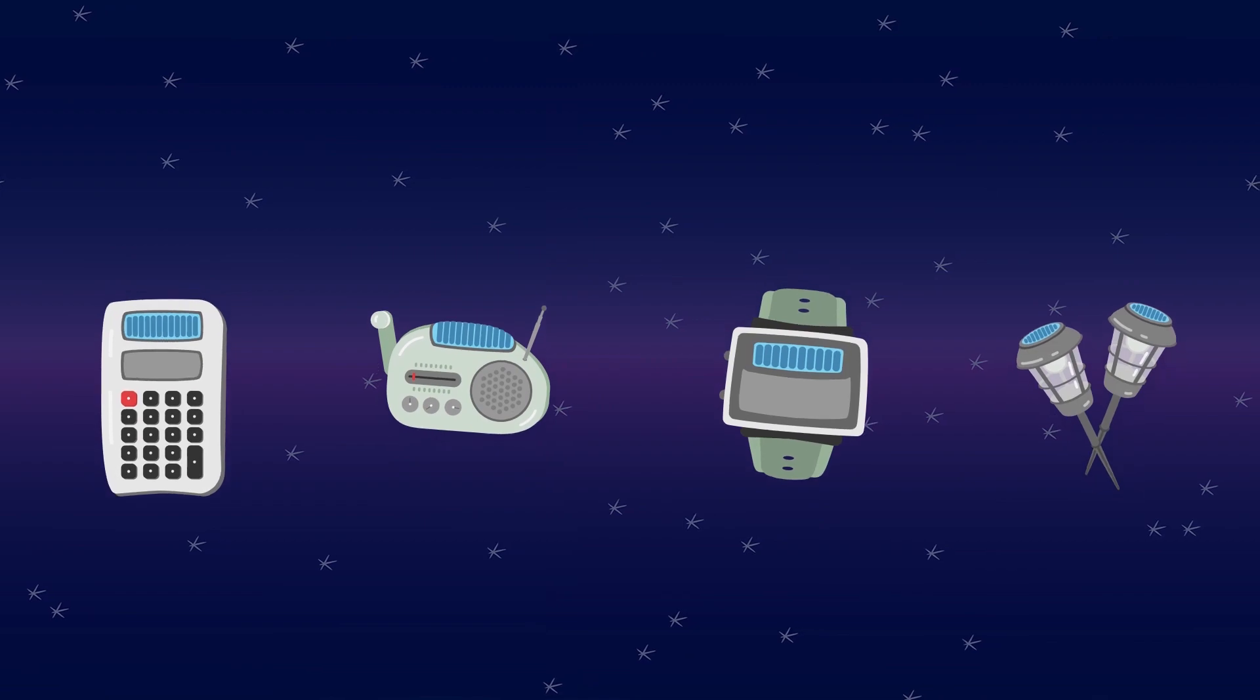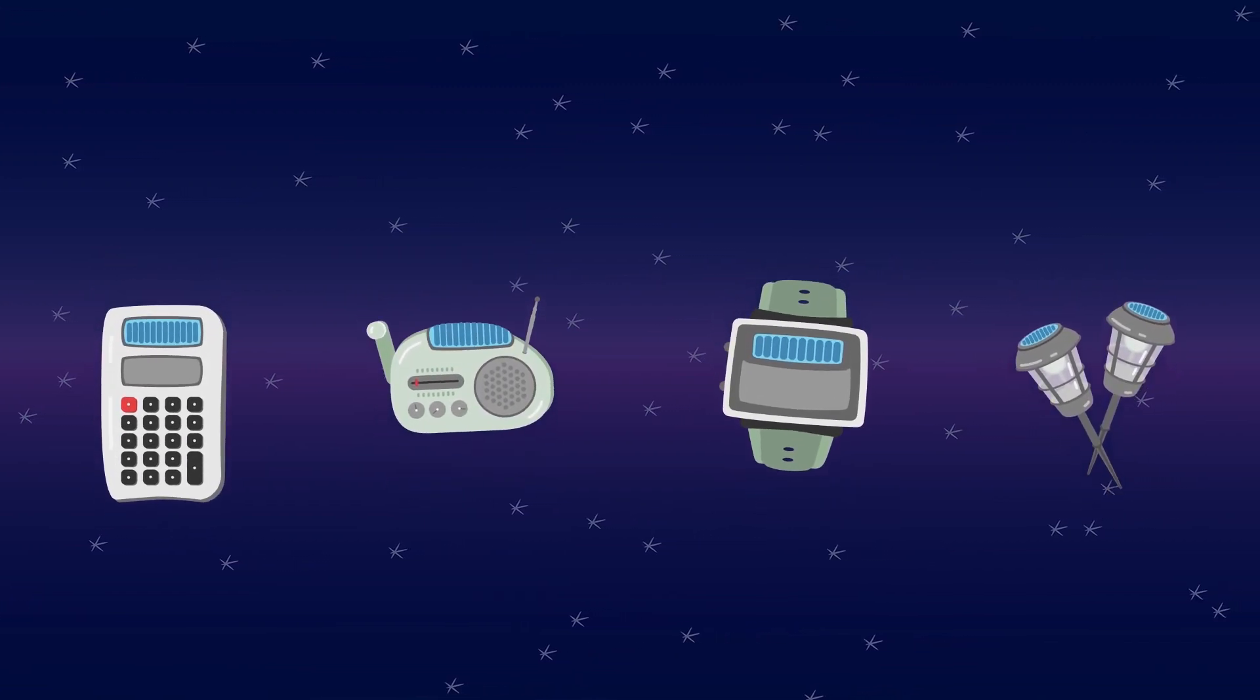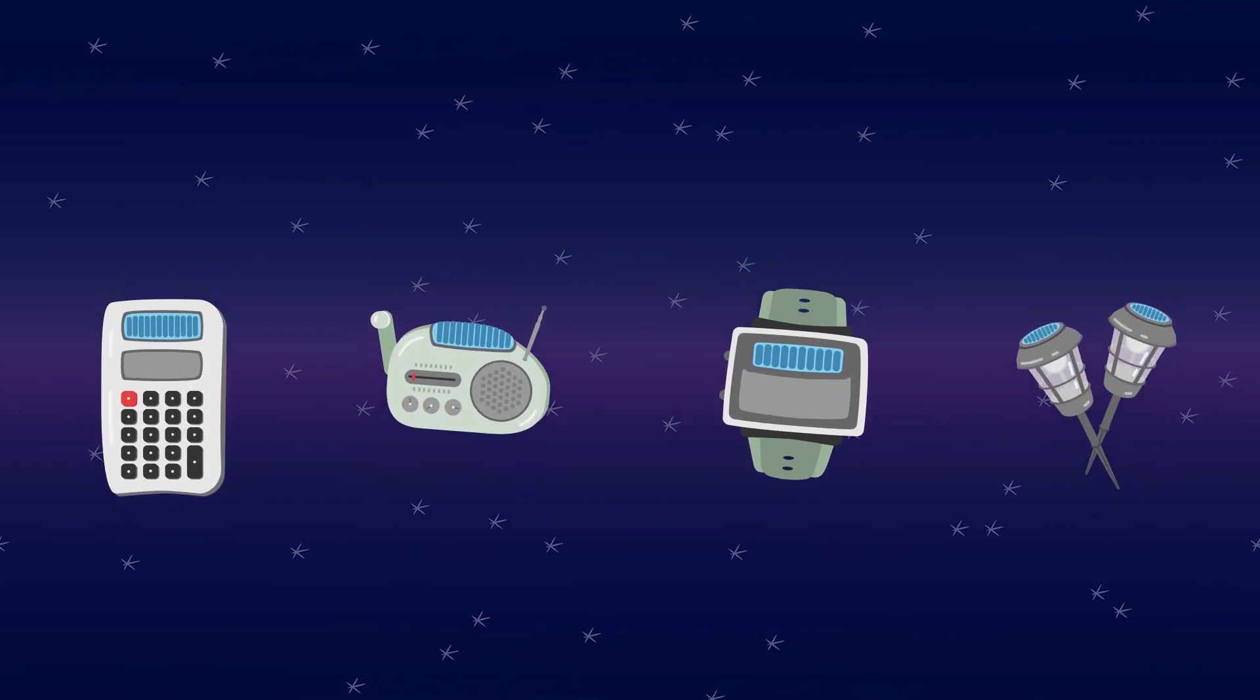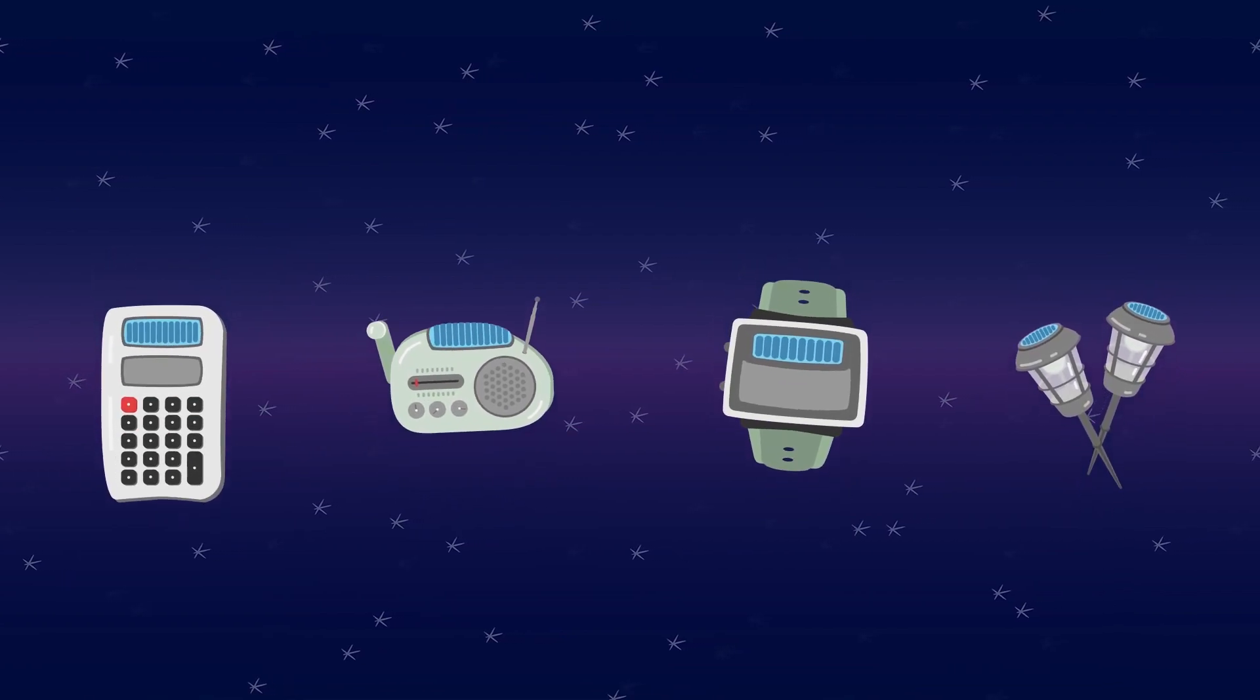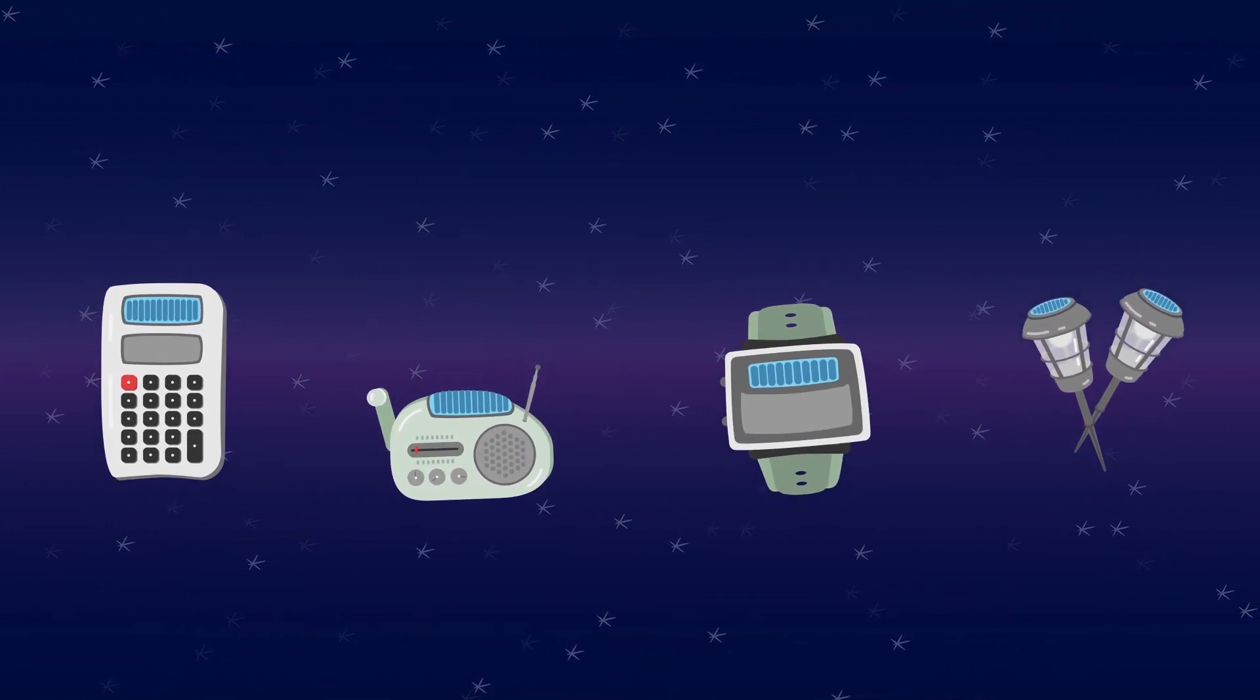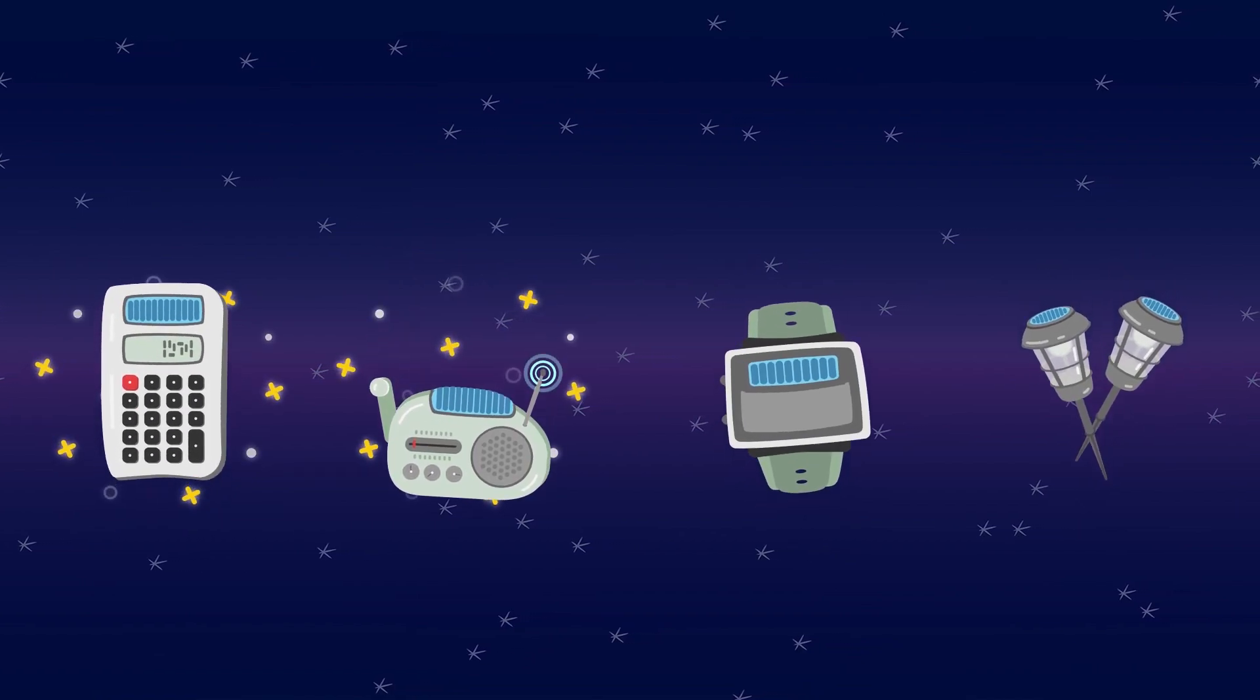Over time, scientists figured out how to turn sunlight into electricity using solar panels. Solar panels became popular when people started using them on things like calculators, radios, and watches.